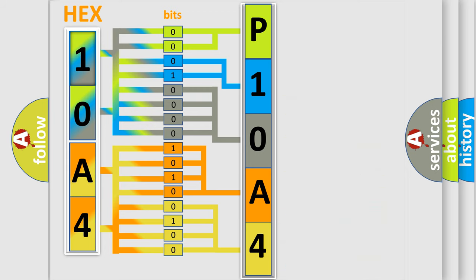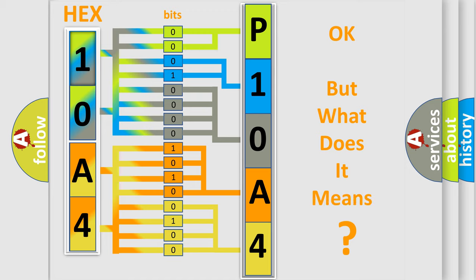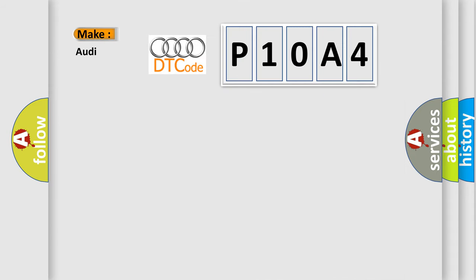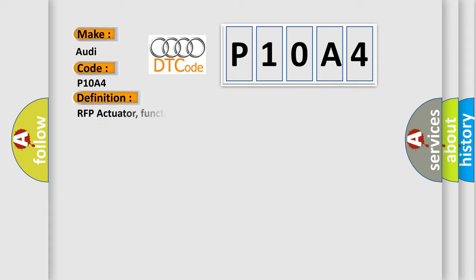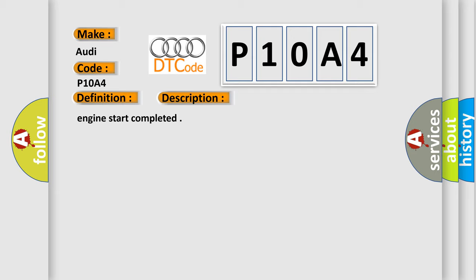We now know in what way the diagnostic tool translates the received information into a more comprehensible format. The number itself does not make sense to us if we cannot assign information about what it actually expresses. So, what does the diagnostic trouble code P10A4 interpret specifically for Audi car manufacturers? The basic definition is RFP actuator functional check. Here is a short description of this DTC code.